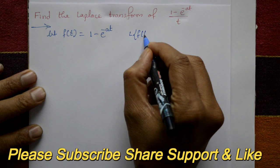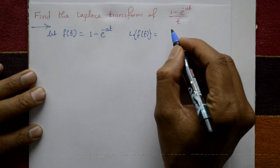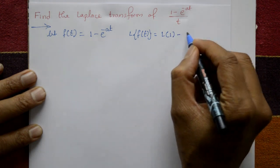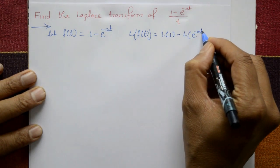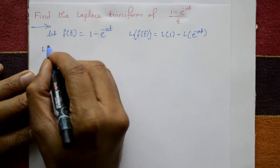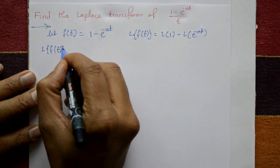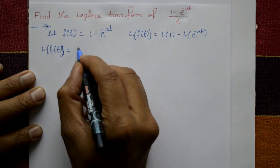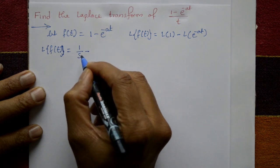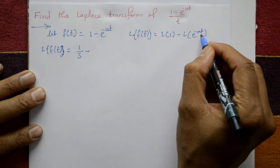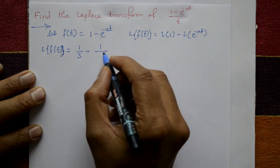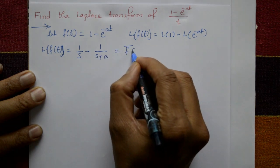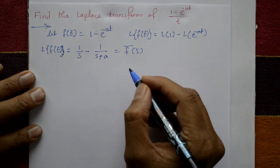Applying Laplace transform on both sides: L{f(t)} equals Laplace of 1 minus Laplace of e raised to minus at. So L{f(t)} equals 1 by s minus 1 upon s plus a. This part is f bar of s.